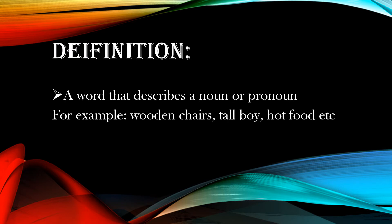An adjective is a term that we use to modify or describe a noun or pronoun. For instance, 'wooden chair' — here chair is a noun and the word wooden is used as an adjective to describe what kind of chair it is. Similarly, 'a tall boy' — boy is a noun whereas tall is an adjective. The last one is 'hot food' — here we describe the word food by placing an adjective, hot, meaning the food is hot.